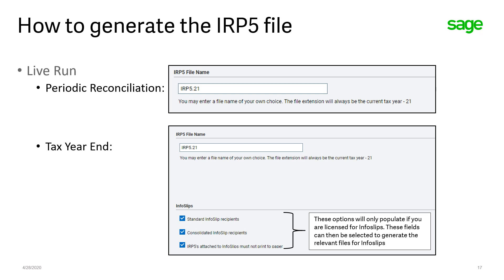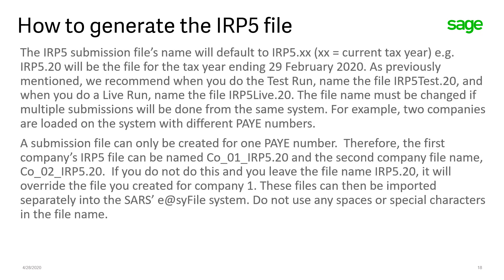Irrespective of whether you're doing a test or a live run, the file names are always the same. It is therefore extremely important that you give your file names a unique name and differentiate between test and live. The IRP5 submission files will always default to IRP5.XX where XX represents the current tax year. We recommend that when you do the test run, you name the file IRP5.Test.20, and with the live run, IRP5.Live.20. The file name must be changed if multiple submissions will be done for the same system — for example, if there are two companies loaded on the system with different pay-as-you-earn numbers.